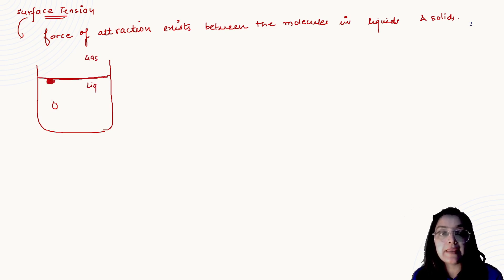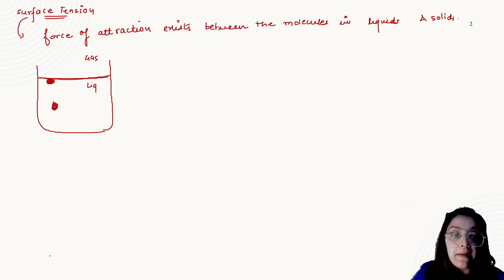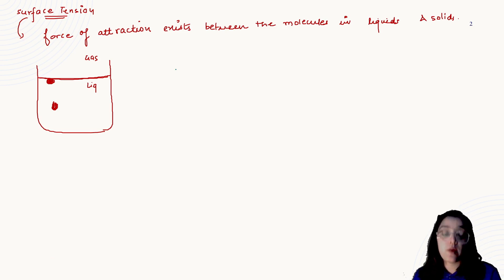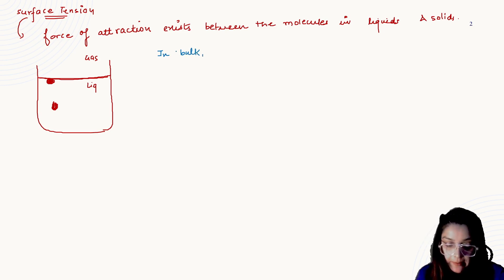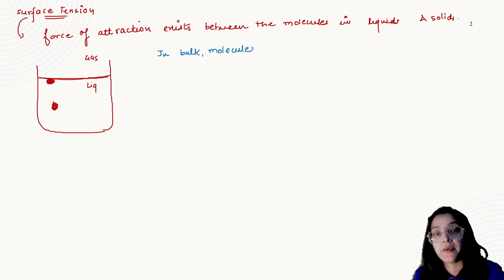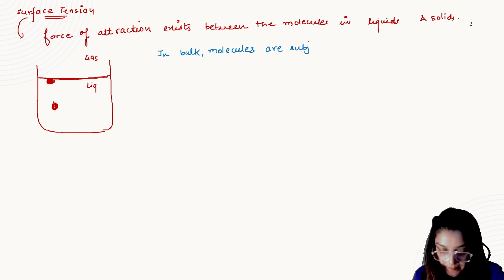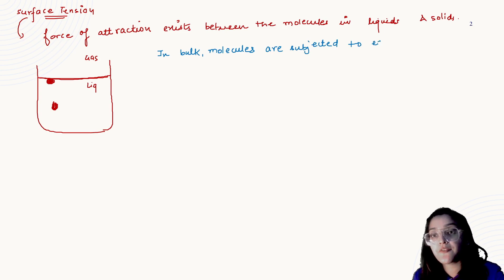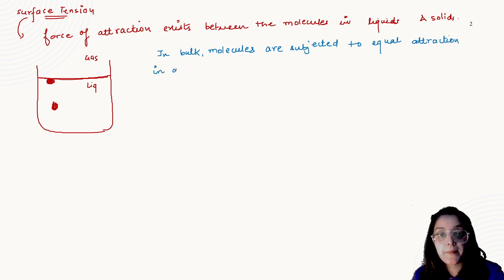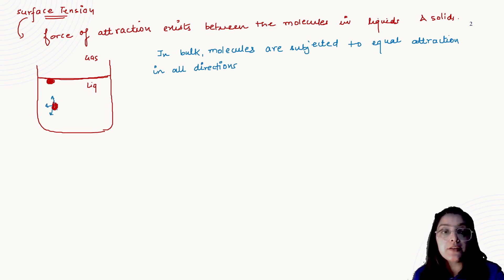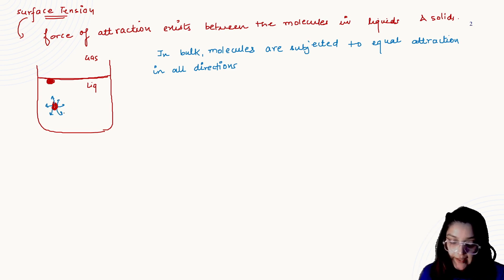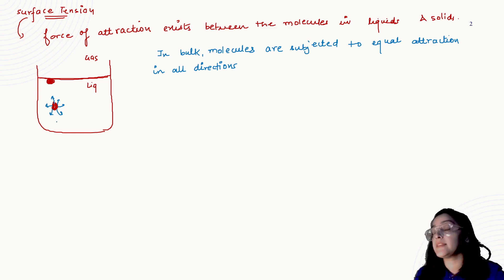This is the molecule present at the interface, while this is the molecule that goes into the bulk part. In the bulk, the molecules are subjected to equal attractive forces in all directions. These equal forces of attraction in all directions tend to cancel out each other.